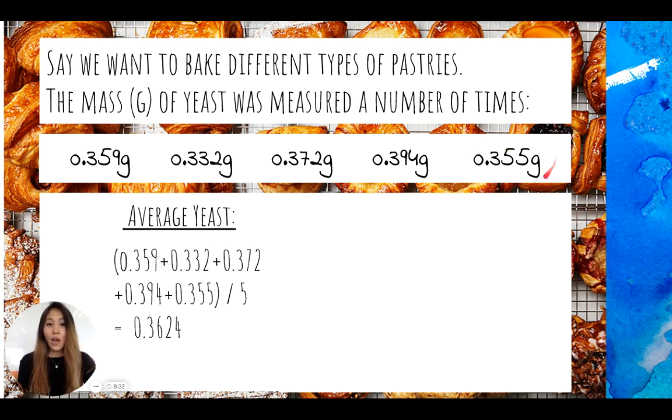We could see that our electronic balance used to measure the masses of yeast is accurate to the thousandths place. So this means that we need to report our final average value in the thousandths as well. And so that's why we round this to 0.362 grams.